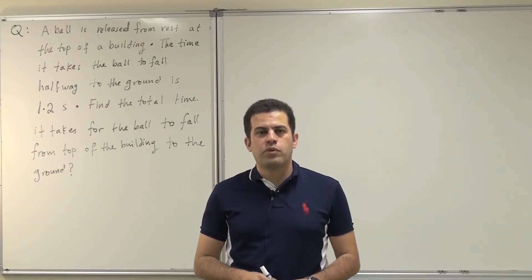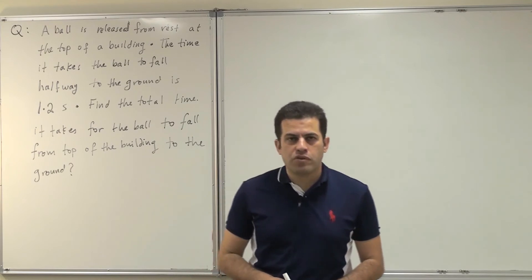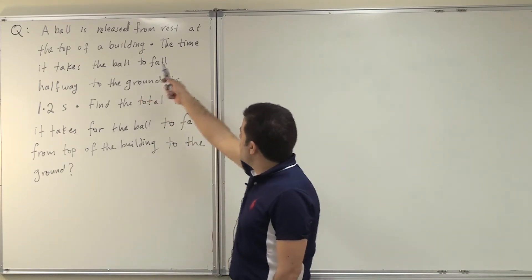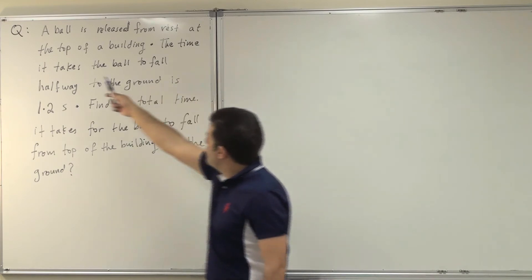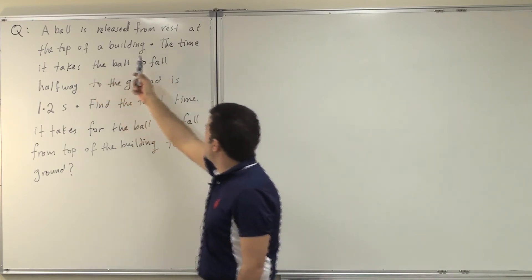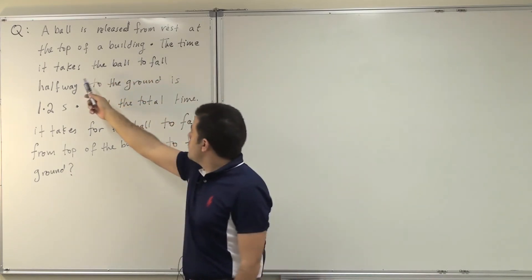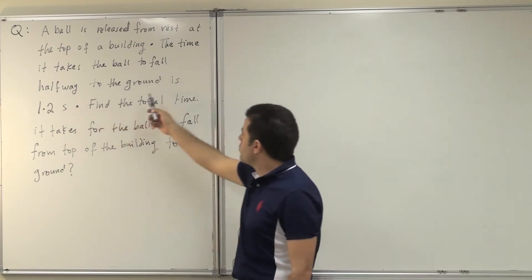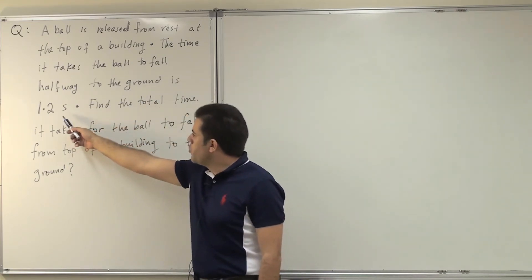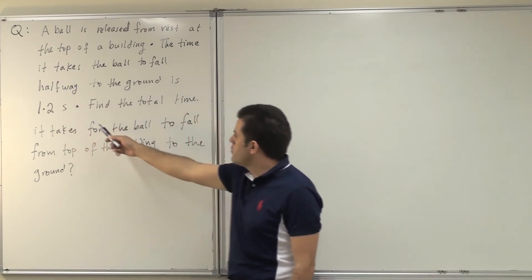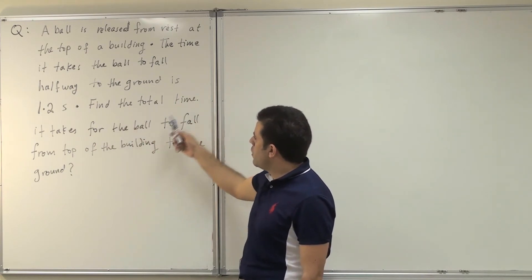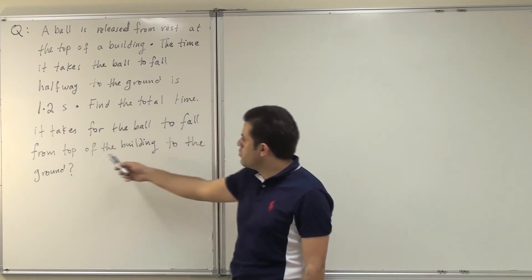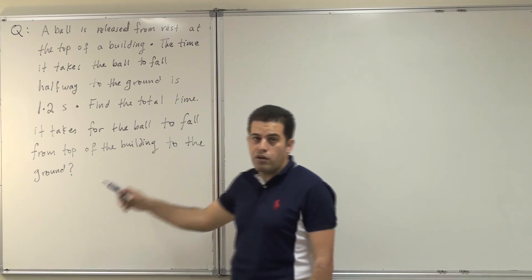As-salamu alaykum. Today we're solving questions from chapter 2. The question reads: a ball is released from rest at the top of a building. The time it takes the ball to fall halfway to the ground is 1.2 seconds. Find the total time it takes for the ball to fall from the top of the building to the ground.